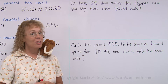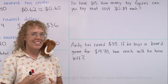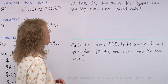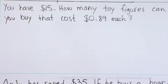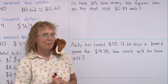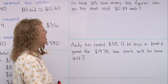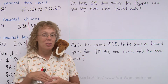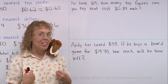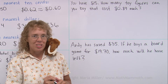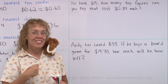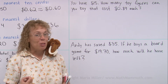We are going to use estimation to solve this problem. You have 15 dollars — how many toy figures can you buy that cost 89 cents each? If you have a calculator, this is an easy problem to solve by division. But we're not going to use division; we're going to use estimation and addition, which are easy operations.